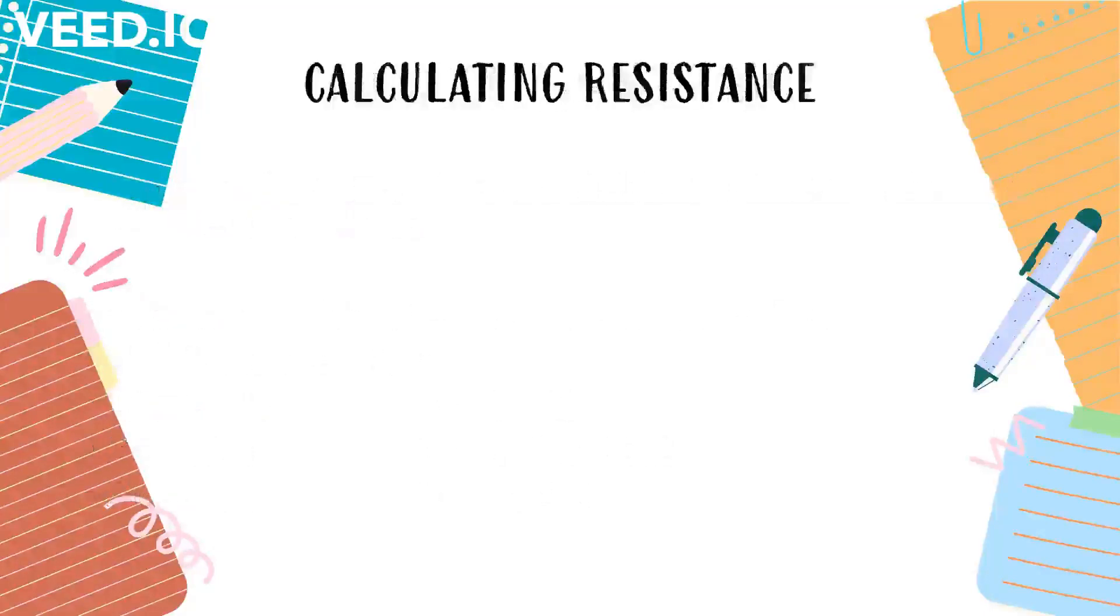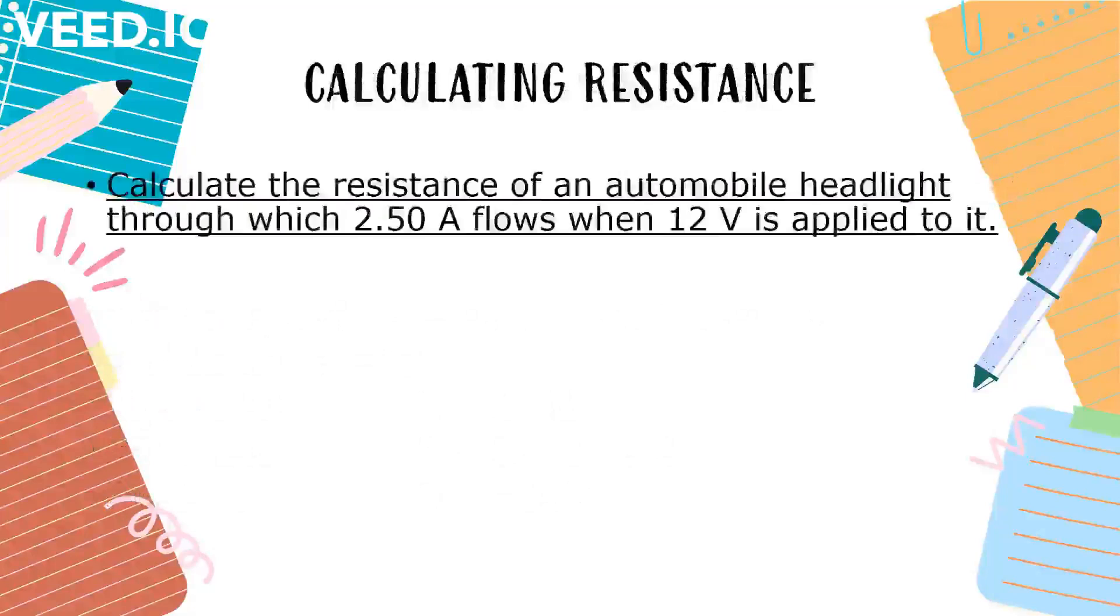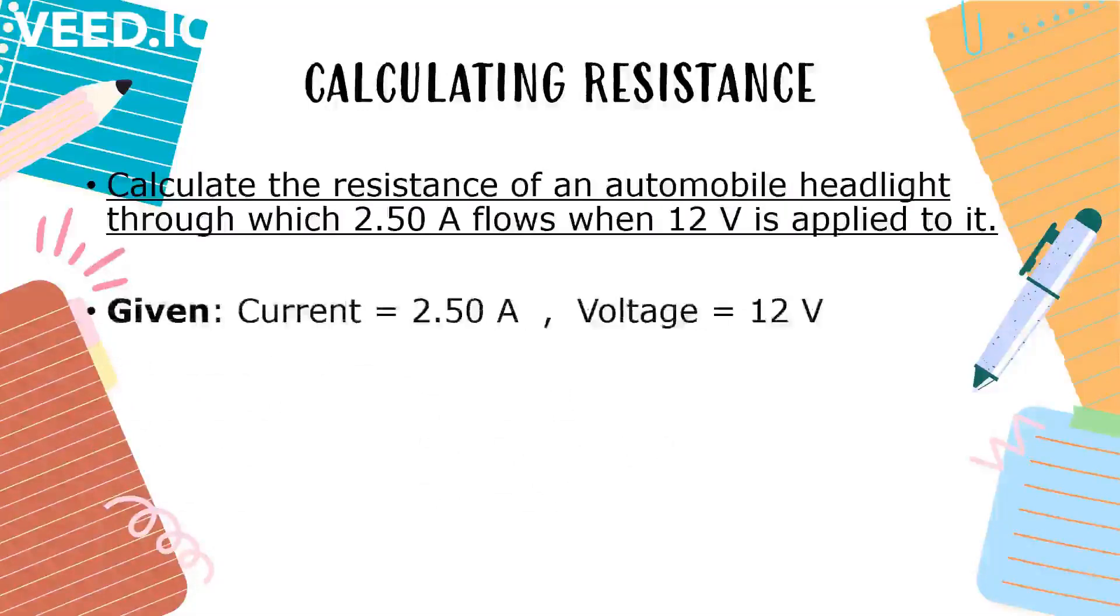Lastly, for calculating resistance. Calculate the resistance of an automobile headlight through which 2.50 amperes flows when 12 volts is applied to it. Given, current is 2.50 amperes. Voltage, 12 volts. Unknown resistance.